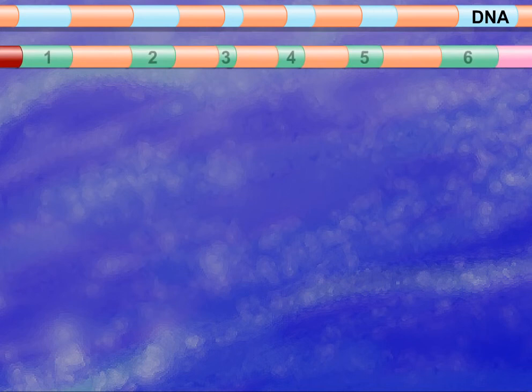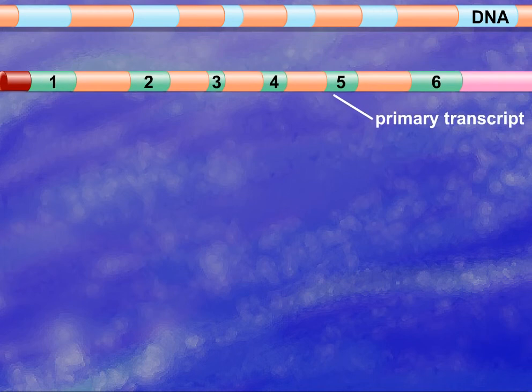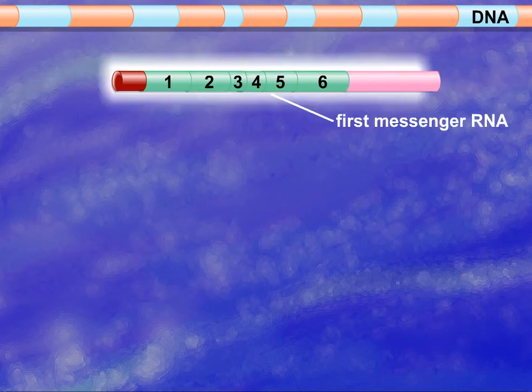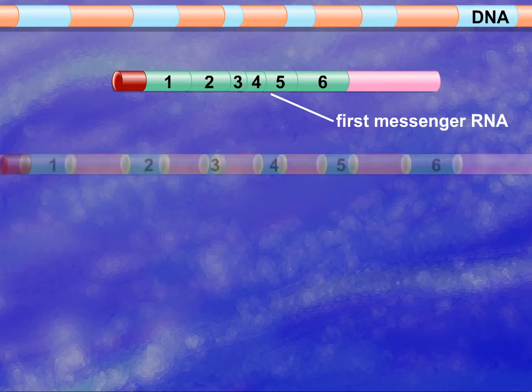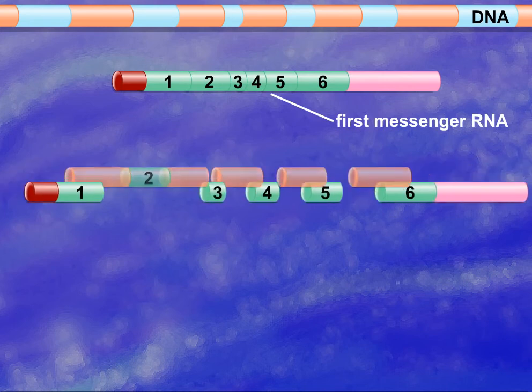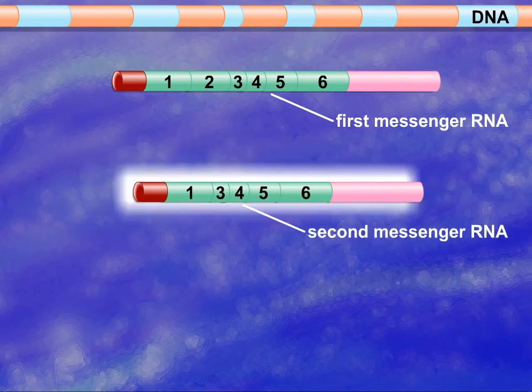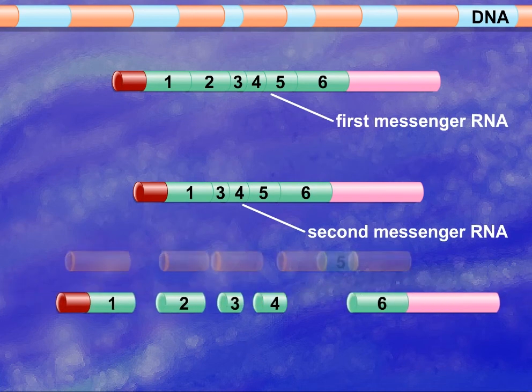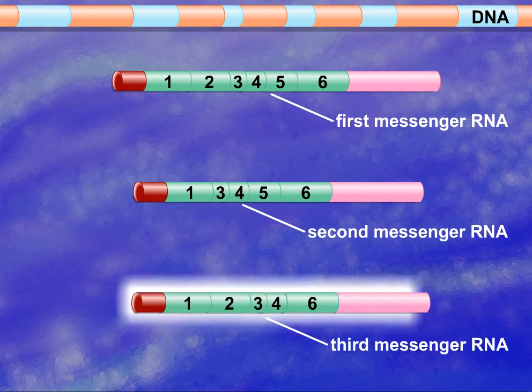One advantage of the splicing process is that a single primary transcript can be spliced into different messenger RNAs by the inclusion of different sets of exons. This process, called alternative splicing, explains how the 30,000 genes in the human genome are able to encode the 120,000 different translated messenger RNAs reported to exist in human cells.